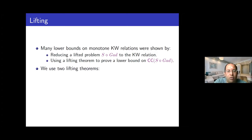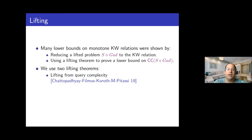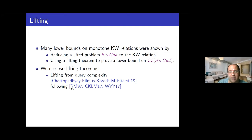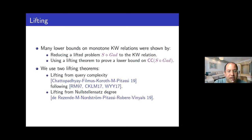Many lower bounds on monotone KW relations were shown using lifting theorems by two steps: choose some lifted problem and reduce it to the KW relation, then use the lifting theorem to prove a lower bound on the lifted problem, and the reduction means the same lower bound holds for the KW relation as well. In this work, we use two lifting theorems: one from a joint work with Arkadev Chattopadhyay, Yuval Filmus, Sagit Koros, and Toniann Pitassi, and another very recent lifting theorem from Nullstellensatz degree, a joint work with Susanna de Rezende, Jacob Nordstrom, Toniann Pitassi, Robert Robere, and Marc Vinyals.